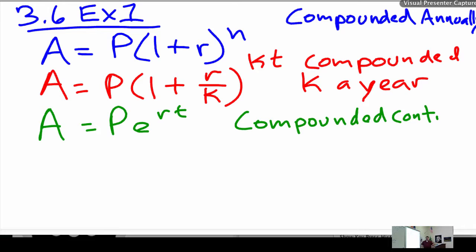Truthfully, the red and blue formula would be the same. For example, if I were to use the red formula and I did annually, how many times a year is annually? Once. So, K would equal 1. And if you plugged in 1 for K, you'd get the blue formula, right? So really, the only two that you need to memorize is the red and the green one. Does that make sense?